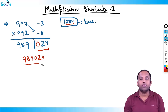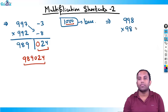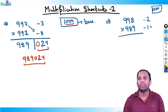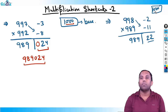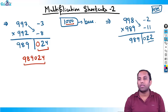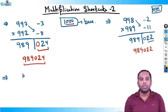One more example: 998 into 989. Again base is 1000. Differences are minus 2 and minus 11, giving 22 for the right part. Cross addition gives 989 again. This right part has only two digits, but base 1000 has three zeros, so as per the rule we put a zero to make three digits: 022. The answer is 989022.